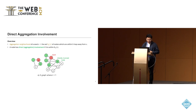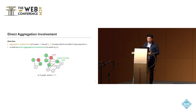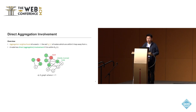For direct aggregation involvements, the aggregation neighborhood of a seed set S is the set of nodes within k hops away from the seeds. A node has direct aggregation involvement if it is within the aggregation neighborhood of the seeds. For example, with one hop, selecting nodes G and C as seeds (the red nodes), the green nodes within one hop away are the directly involved nodes, and the count of directly involved nodes is the direct involvement score.